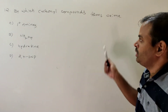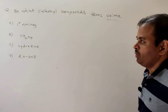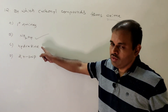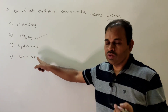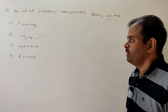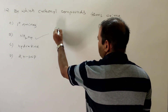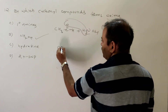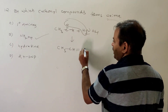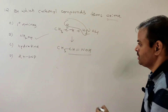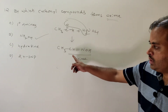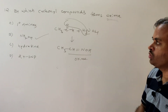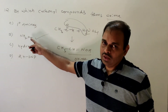Twelfth question: by which reagent do carbonyl compounds form an oxyme? Carbonyl compounds react with NH2OH (hydroxylamine) to form oxymes; hydrazine gives a hydrazone; 2,4-dinitrophenylhydrazine gives the corresponding 2,4-dinitrophenylhydrazone; primary amines give a Schiff's base. For example: CH3CHO + NH2OH — loss of H2O takes place, giving CH3CH=NOH, which is the oxyme (acetaldehyde oxyme). This is about the twelfth question — carbonyl compounds form oxymes with hydroxylamine (NH2OH).